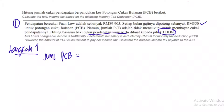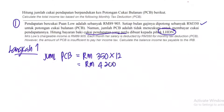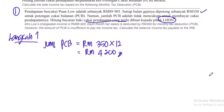Sebulan dia dipotong RM350, kita darab dengan 12. Kita dapat RM4,200. Ini yang dipotong daripada slip gaji dia, PCB dia.